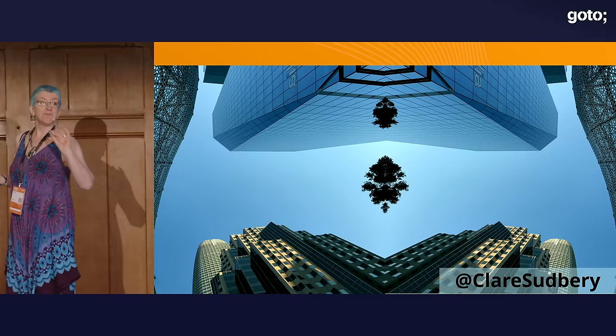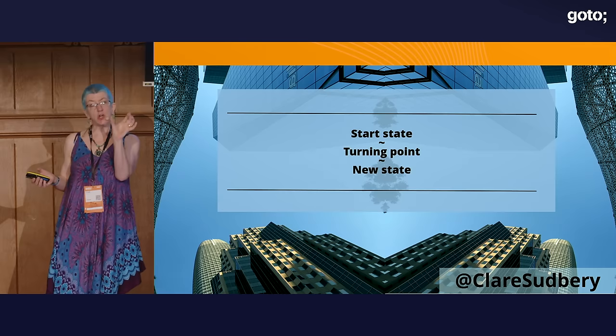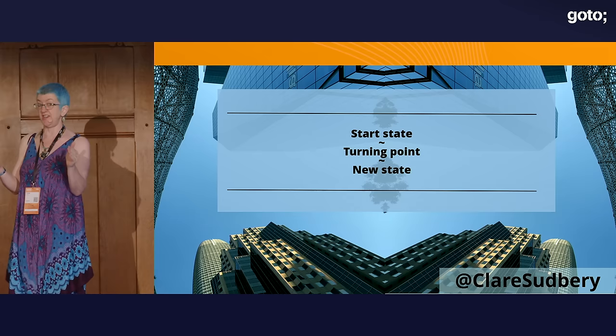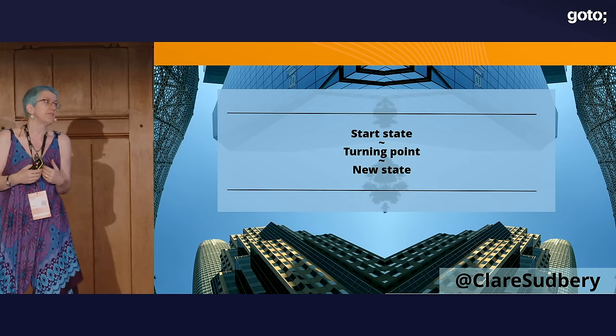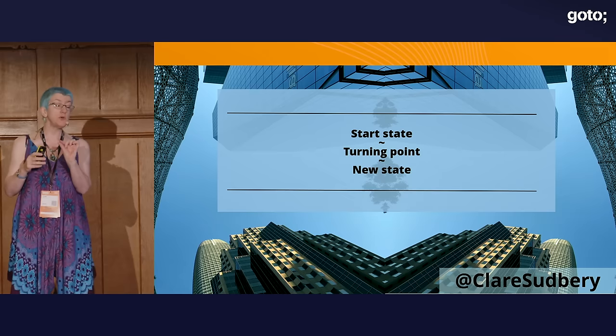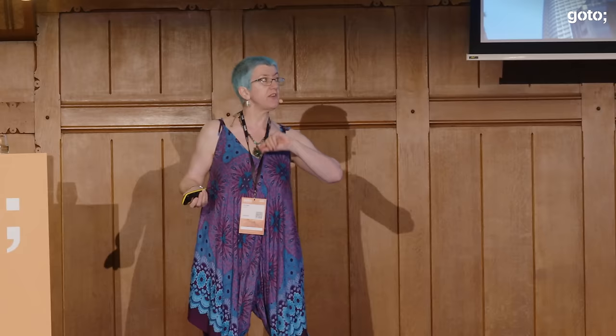The one thing he said that I've never forgotten is that each chunk of your story — each scene — should have a start state, a turning point, and an end state. Your protagonist will be in a particular state at the start of the scene, and at some point there will be a turning point which makes them end up in a different state. This is a very good way of holding your audience and making people want to keep turning the pages.